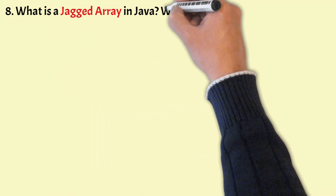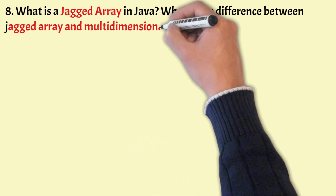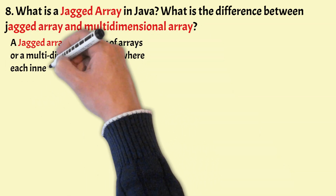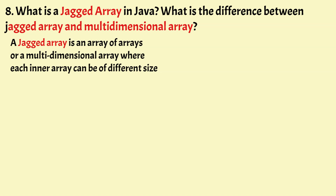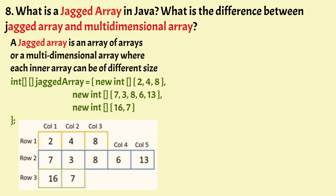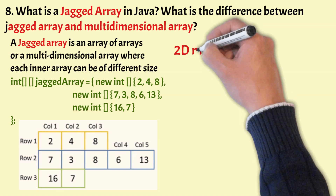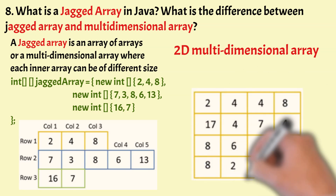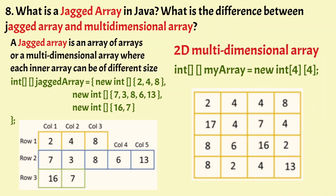What is a jagged array in Java, and what is the difference between a jagged array and a multidimensional array? A jagged array is an array of arrays where each inner array can be of different size — meaning there can be a variable number of columns in each row, and each member array occupies its own block in memory. In a 2D jagged array example, you can see the variable number of columns in each row. In contrast, a 2D multidimensional array has the same number of columns in each row, typically represented as a matrix — for example, a 2D array with 4 rows and 4 columns.